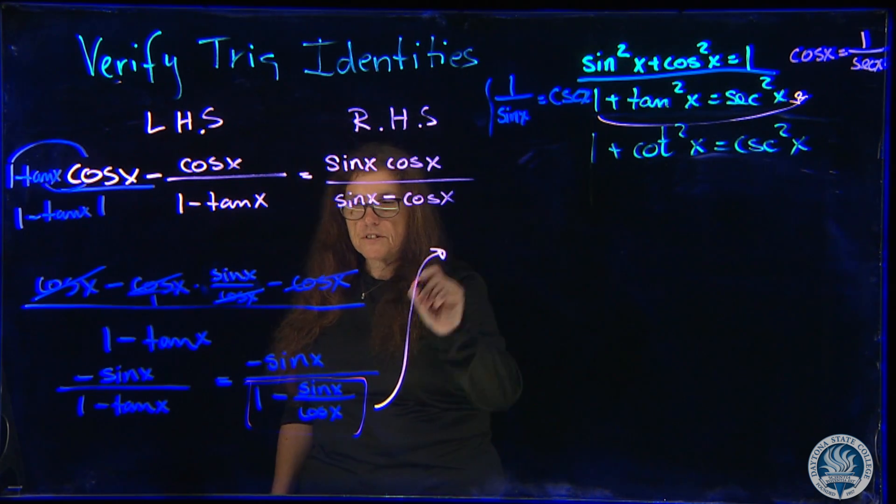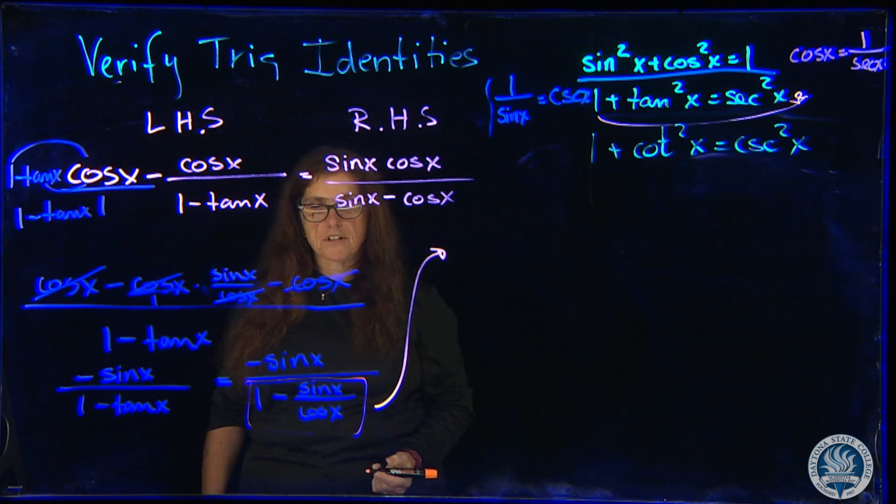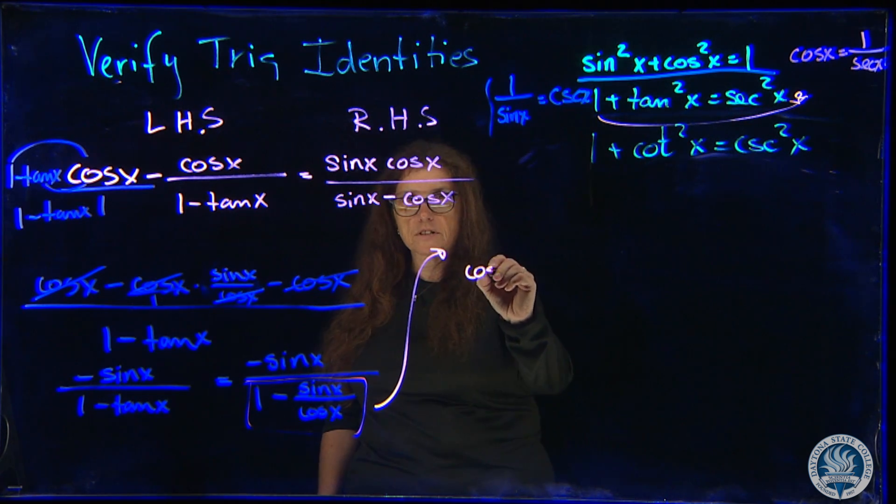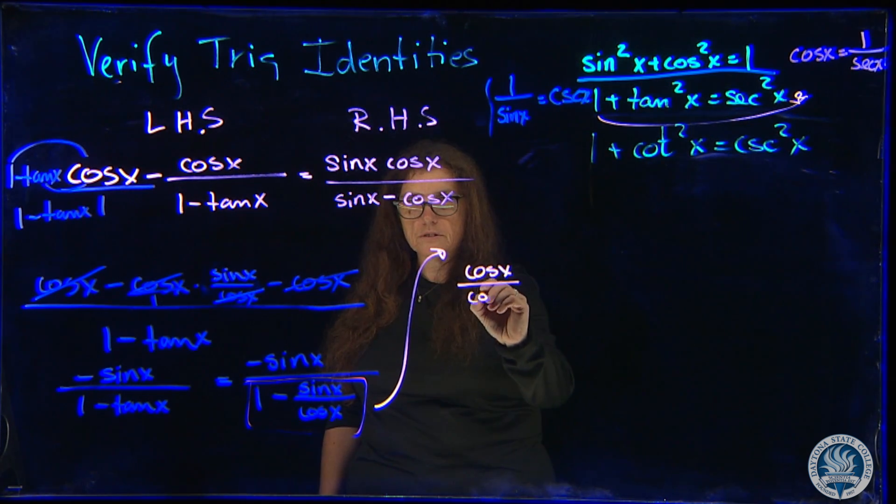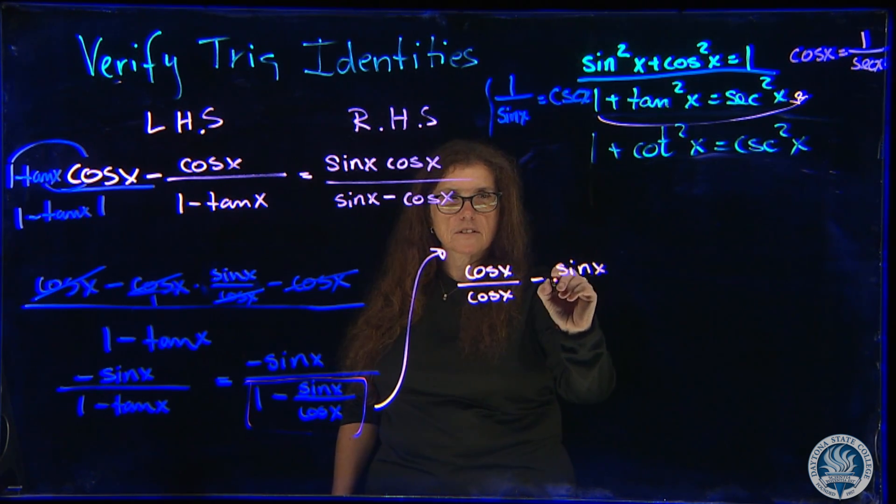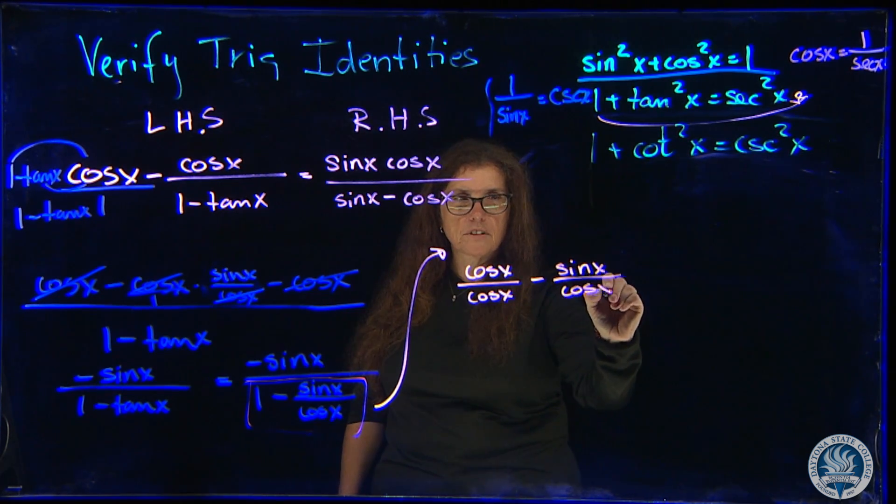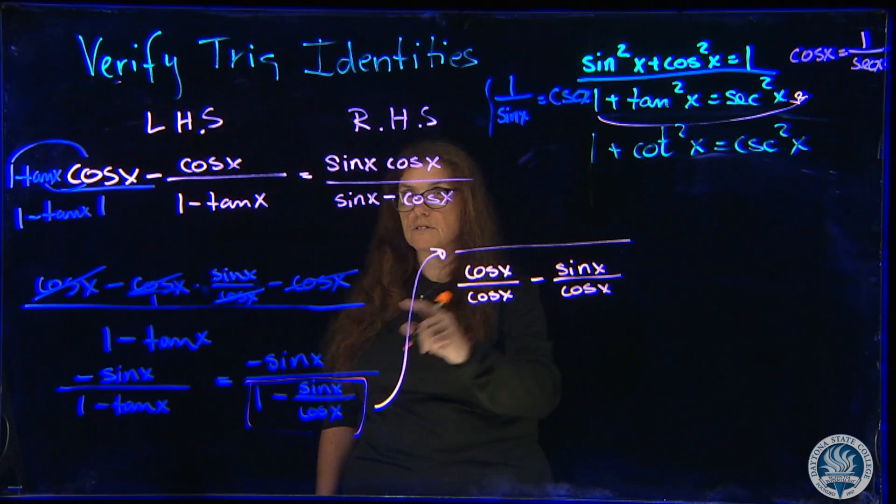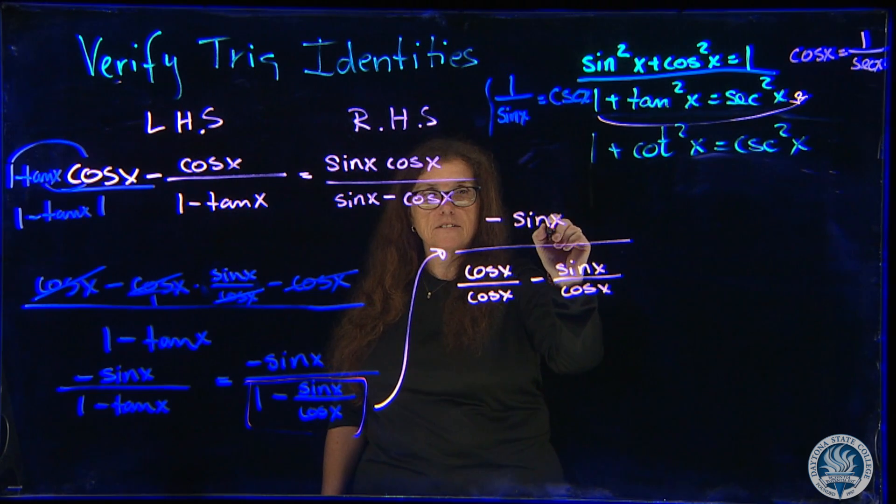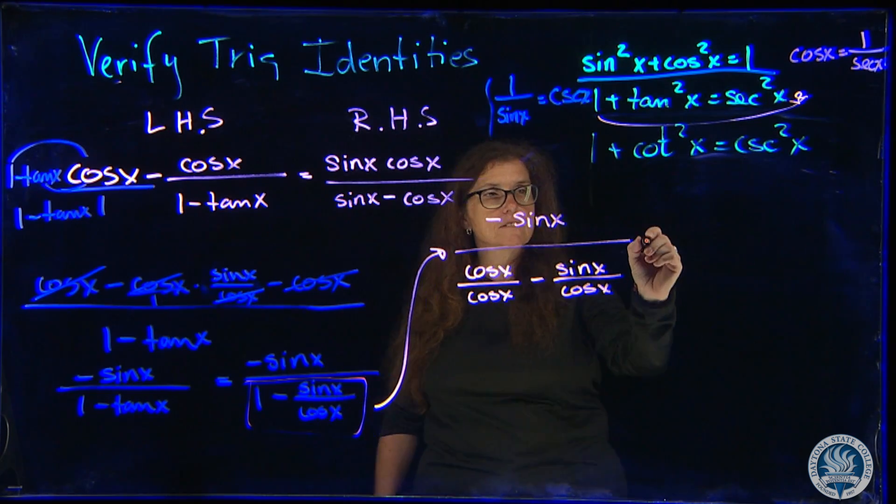So instead of 1, we have to have the same denominator again. So I'm going to write cosine of x over cosine of x minus sine of x over cosine of x. And that, of course, is all over negative sine of x. I think we're getting somewhere.